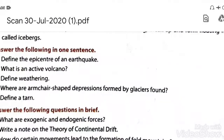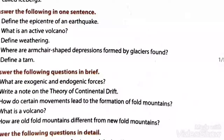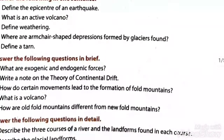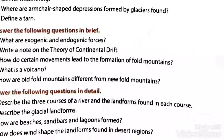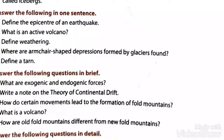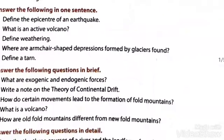Question 4: where are armchair-shaped depressions formed by glaciers found? The armchair-shaped depressions formed by glaciers are found in Scotland, France and Wales. Question 5: define a tarn. A tarn is defined as a lake formed by the filling of a cirque with water when the ice melts.